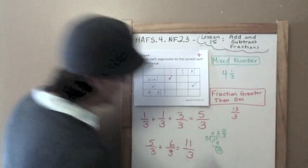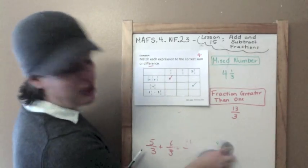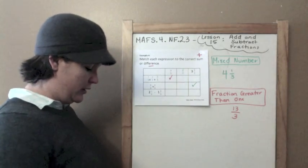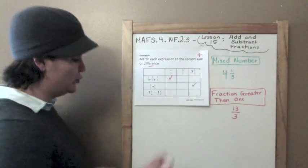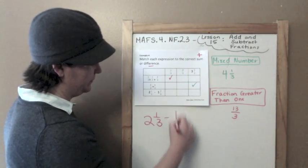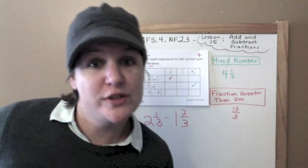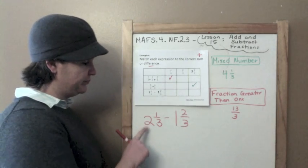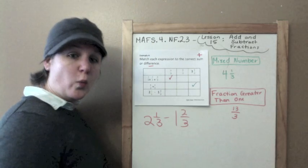Last one. Let me clear some space so I can work out this last one. I've been waiting for this one all day. I need to regroup on this one. Here we have one and two-thirds minus one-third.